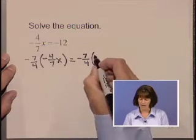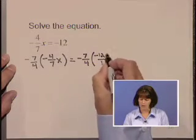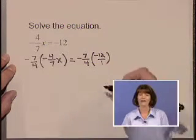I'm going to write that negative 12 as negative 12 over 1 so that I can keep my numerator and denominator straight.